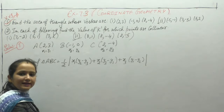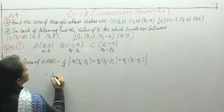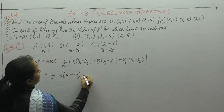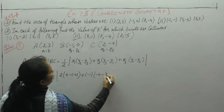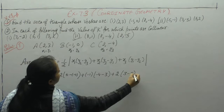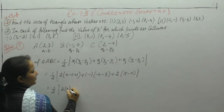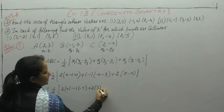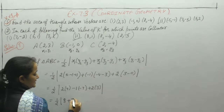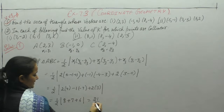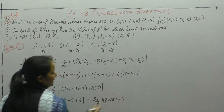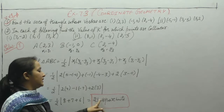Modulus लेंगे तो sign positive होगा. Now put the values: x1 is 2, y2 minus y3, plus x2, y3 minus y1, plus x3, y1 minus y2. Now 2 into (minus 4 minus 0) plus (minus 1) into (0 minus 3) plus 2 into (3 minus minus 4) gives half of 8 plus 3 plus 6, which is 21/2 square units. So area of triangle ABC is 21/2 square units.